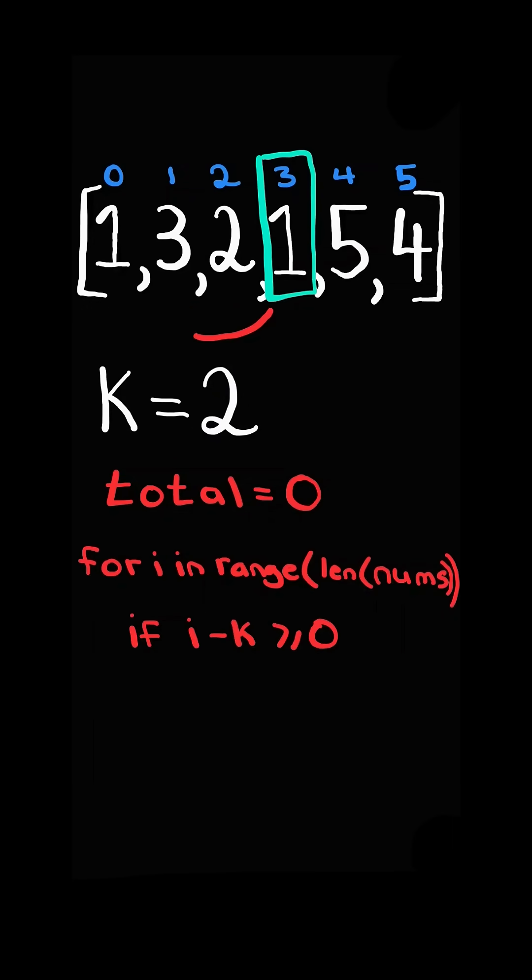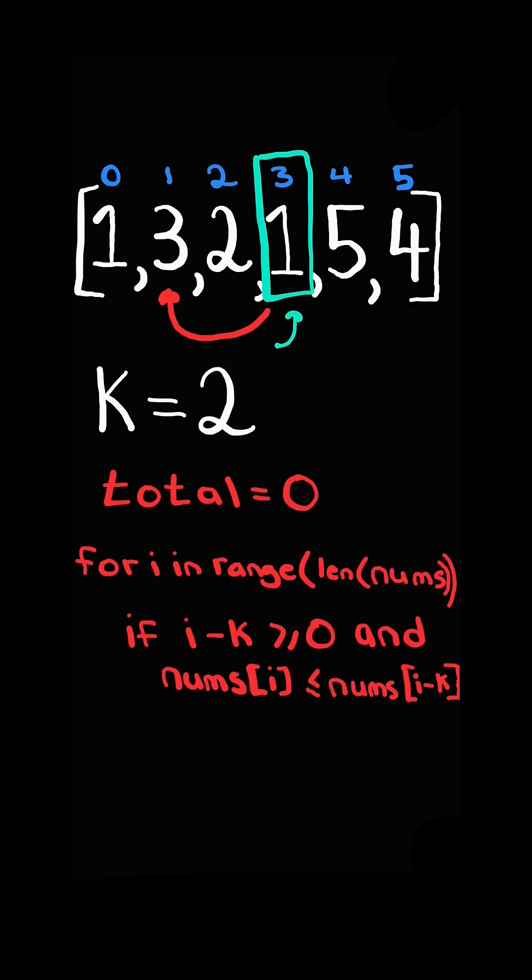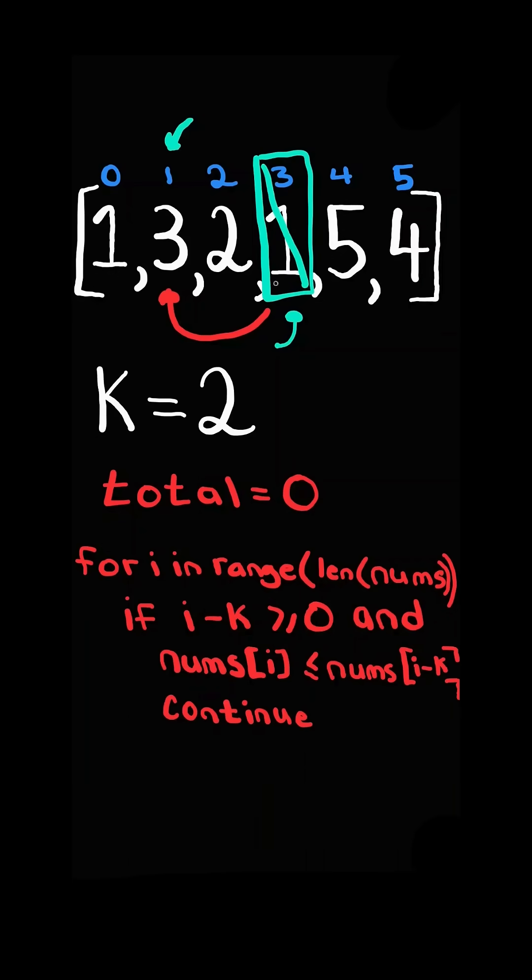Then, we iterate through the list. If i minus k is within bound, and the value at nums[i] is less than the value at nums[i-k], it is not a good number, so we continue.